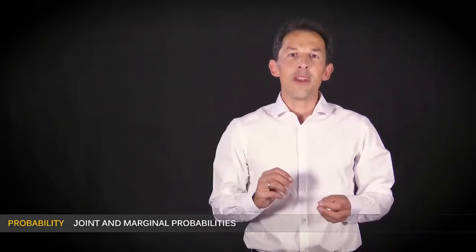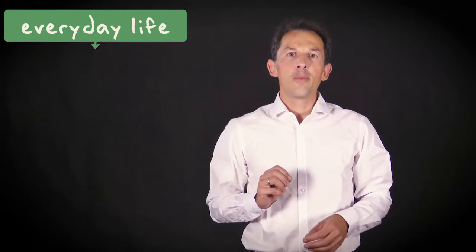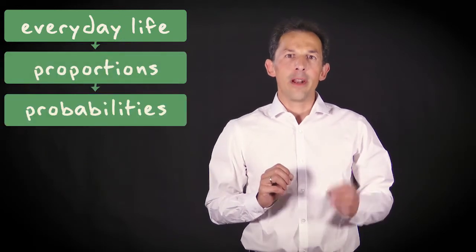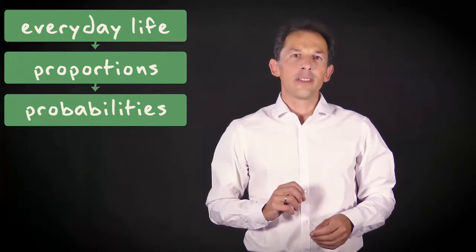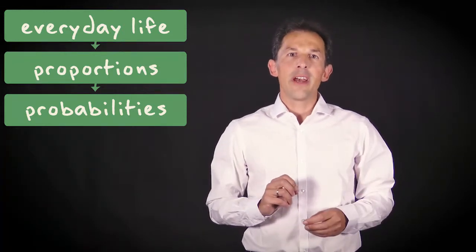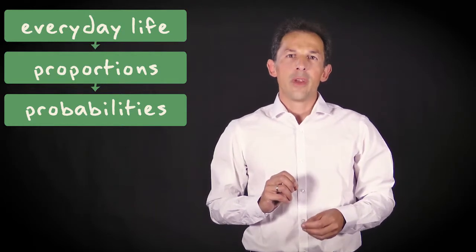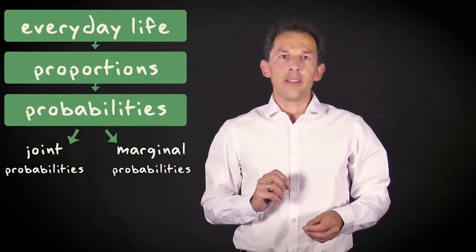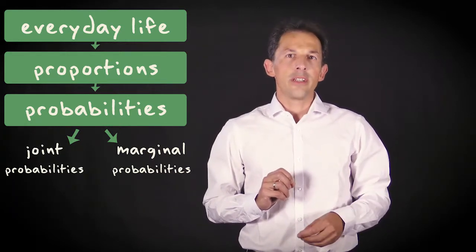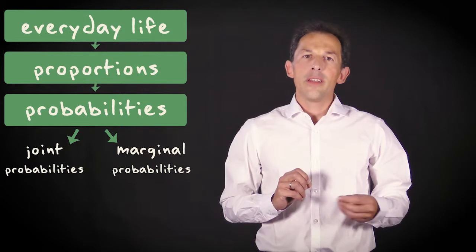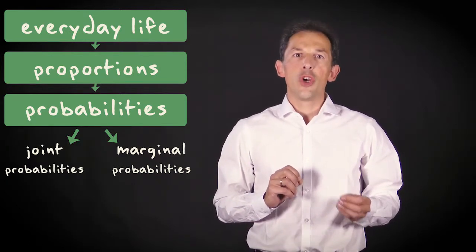Counts of interesting phenomena from everyday life are often turned into proportions and interpreted as probabilities. By exploiting the power of probability calculus, the relations amongst these phenomena can be understood better or used to make predictions. Joint and marginal probabilities are two important types of probabilities encountered in this context. In this video I will explain the meaning of joint and marginal probabilities and show their properties.